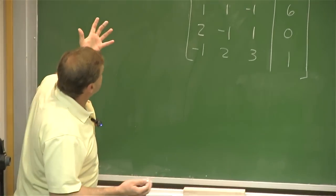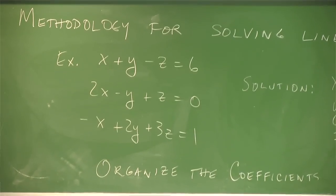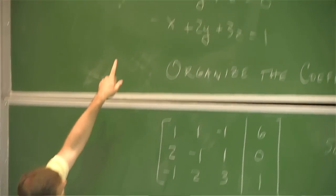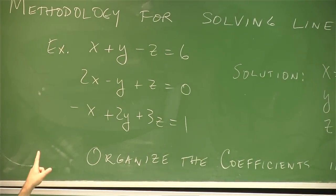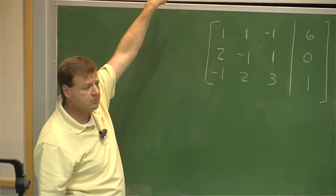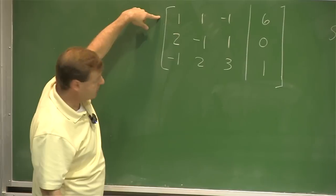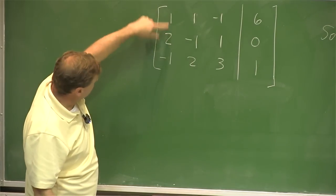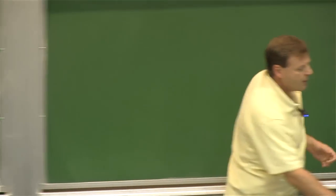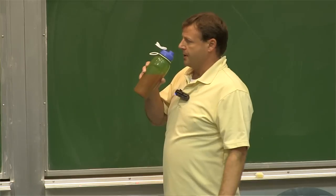How would I eliminate that 2x? I could multiply the top equation by negative 2 and then add it — that would get rid of that 2x. In matrix terms, I would multiply this row by negative 2 and add it to the second row, causing a 0 there. So we're going to use the tools we already know from systems of equations and apply them to the matrix.